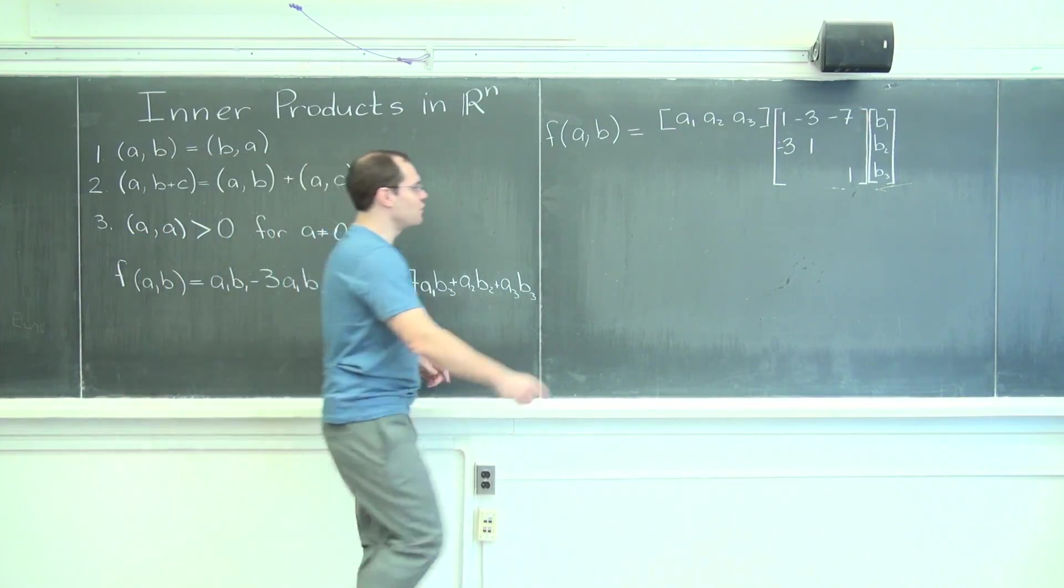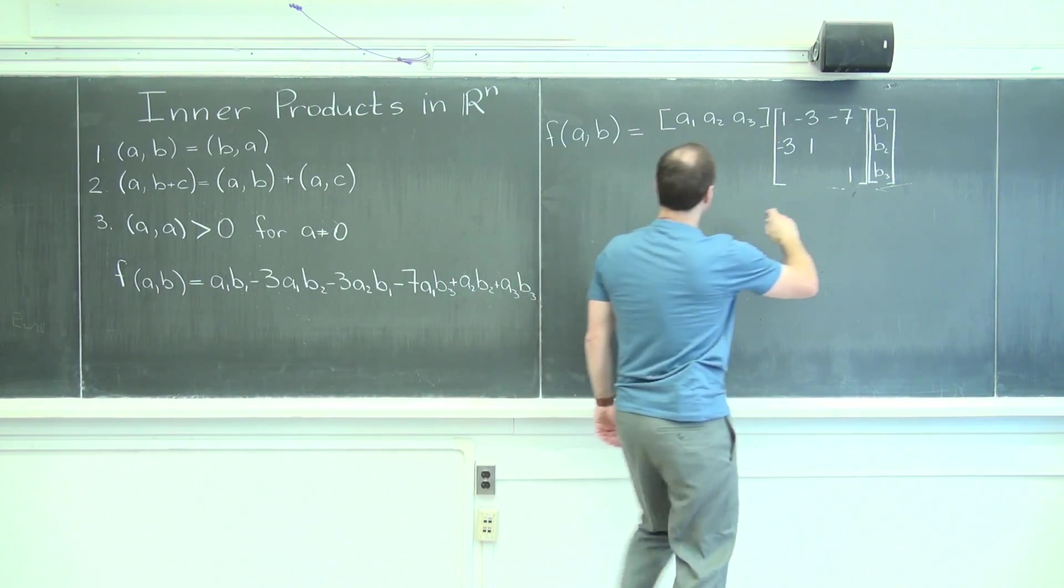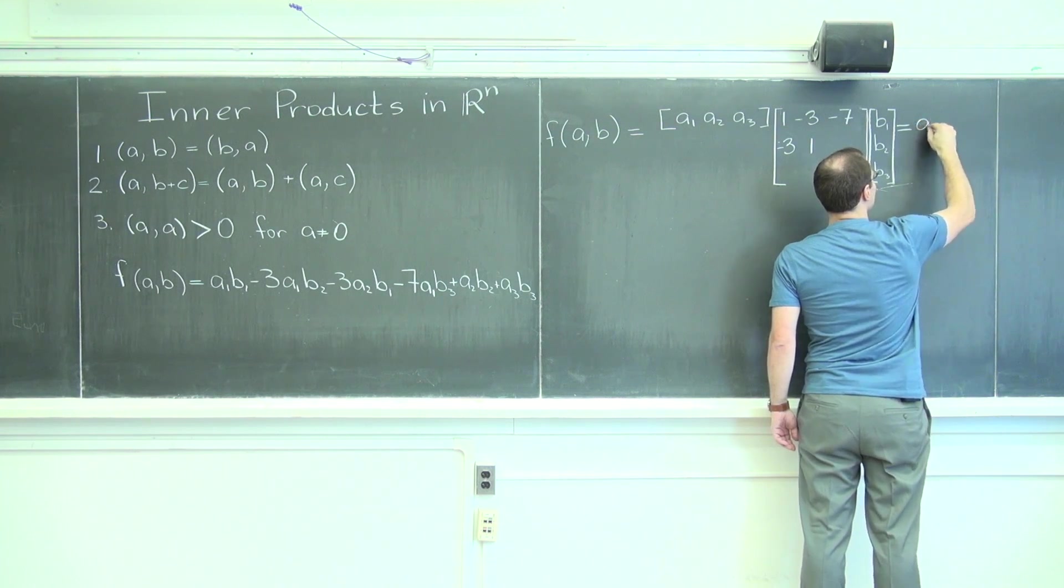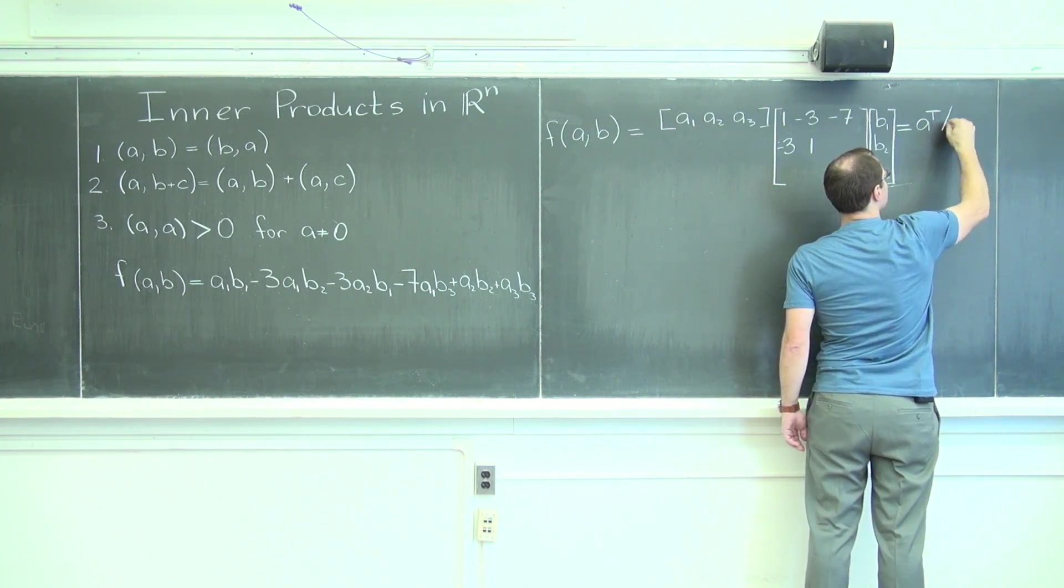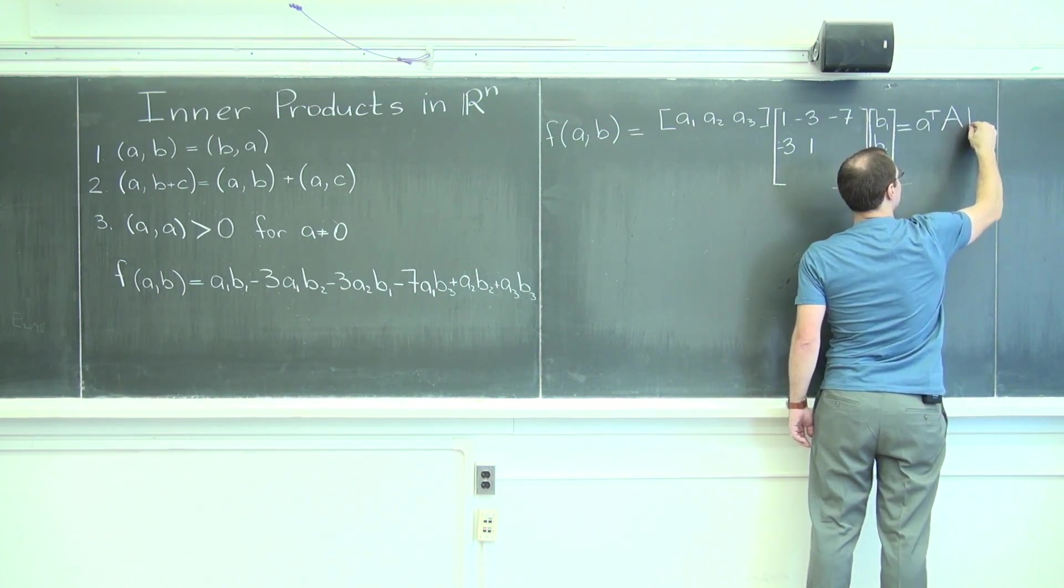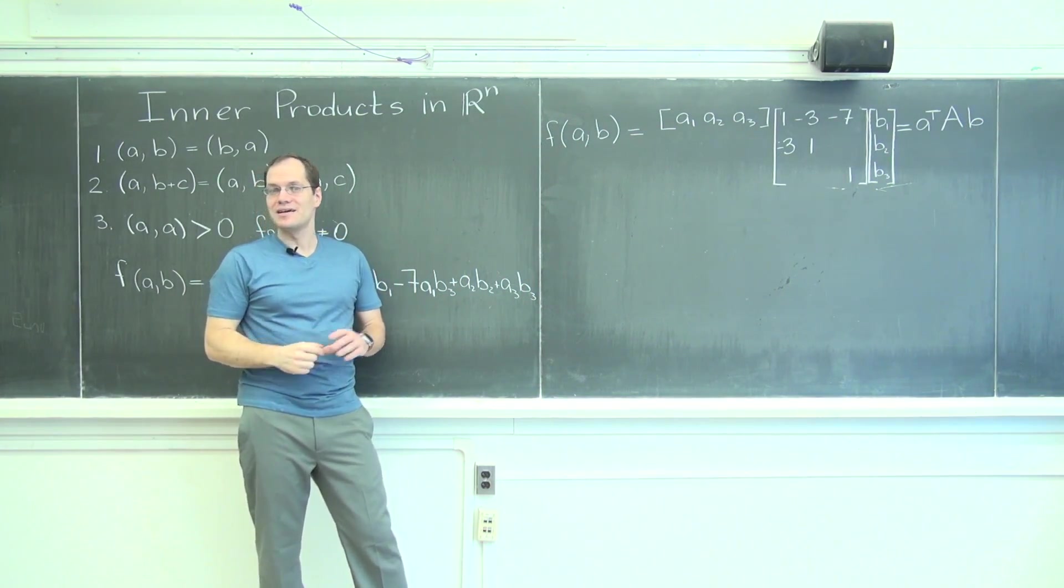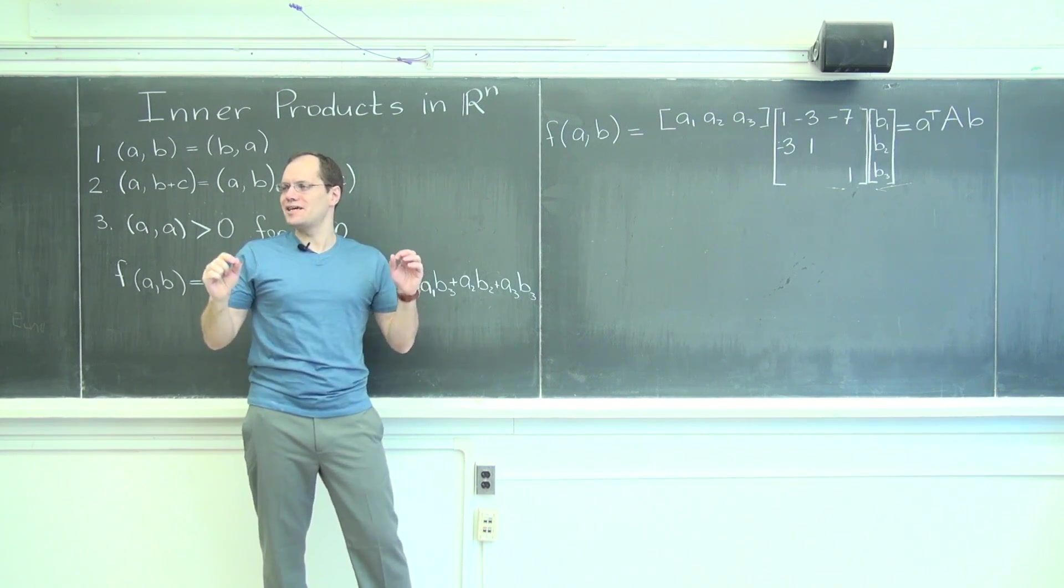And this has the form, do I have space there? I think I do. That's the beauty of the matrix notation, compactness. A transpose A B. Do you guys agree with me? And if you really think about it, that's where transpose appears.